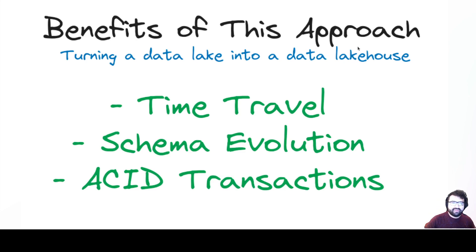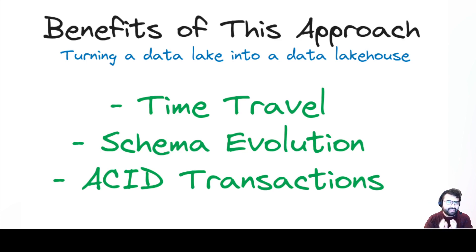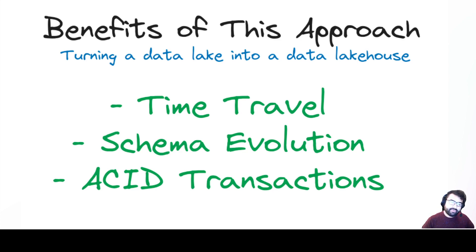This approach of modern table formats brings a bunch of benefits. Time travel is enabled because you can capture snapshots of this list of files — so you can say, I don't want to scan the latest snapshot, I want to scan a previous one and see the table as it was at that time. Schema evolution is possible because the schema is tracked in the metadata, so the engine can apply the current schema to data from all files regardless of what schema they were written with. And ACID transactions are enabled, allowing consistent writes across partitions with atomicity guarantees.